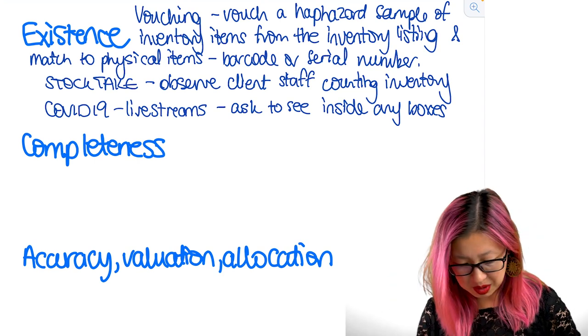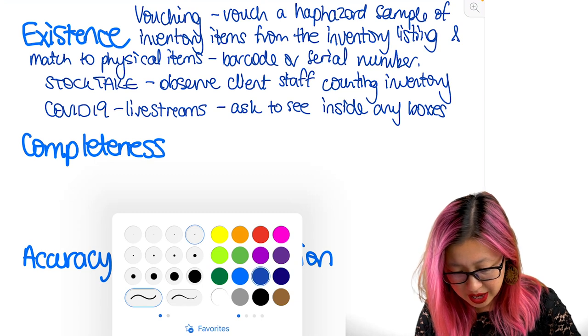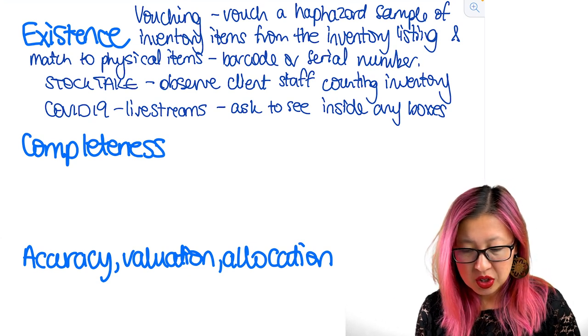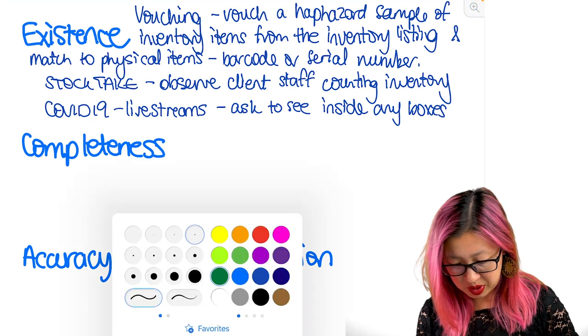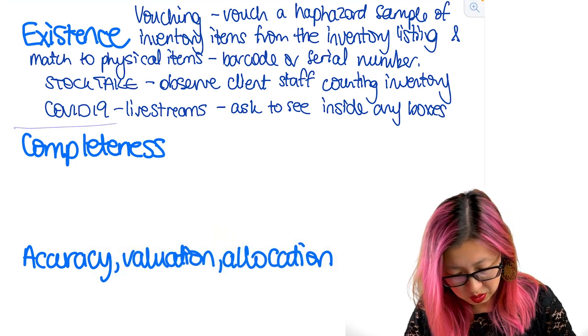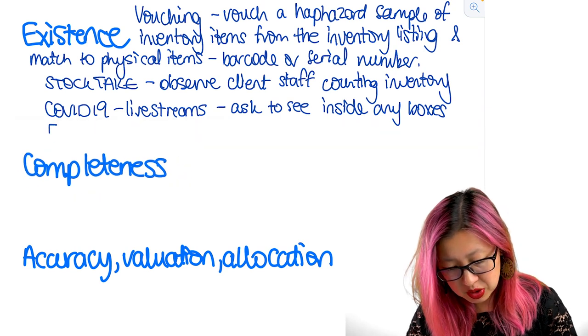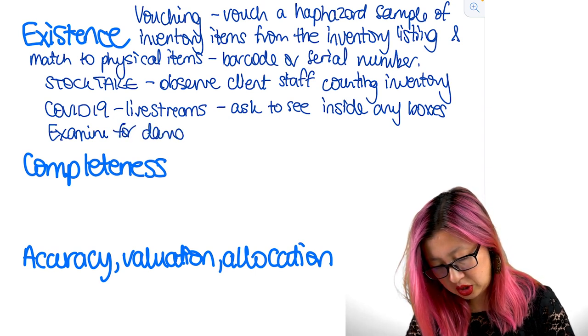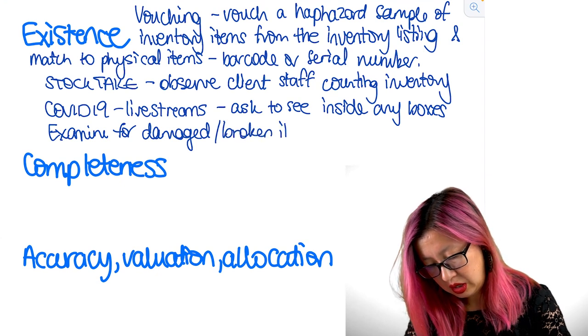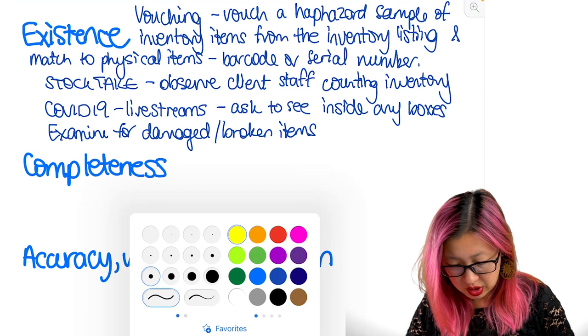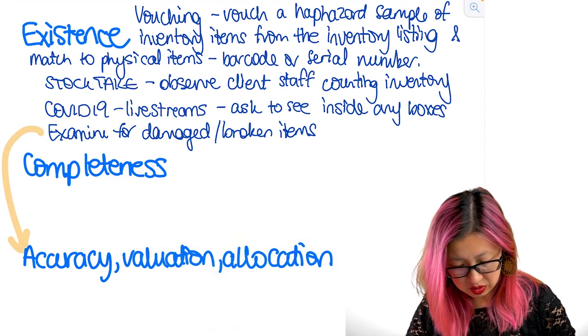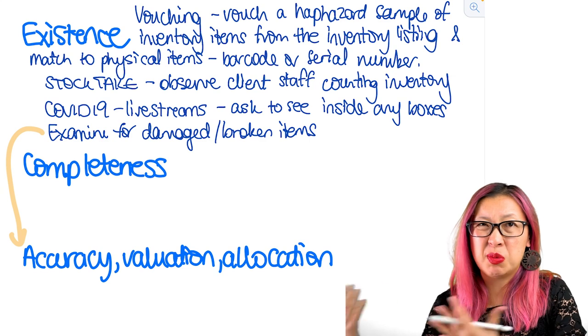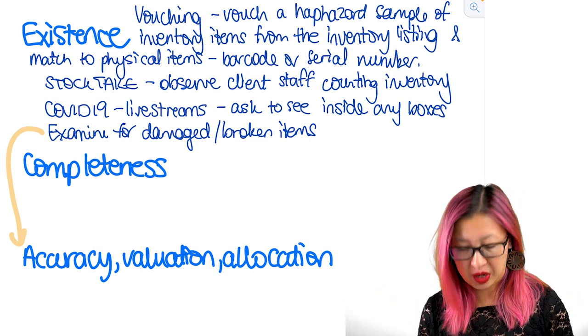So existence vouching: start from the record make sure that the physical item exists. Now the other side of that is completeness because remember existence is an overstatement thing. Companies are more likely to overstate their inventory. So the other thing that we need to look for when we're looking at existence is also we want to examine for any damaged or broken items and that'll link through a little bit later on to our accuracy and valuation. Because broken items will later on help us, oh look this needs to be written off this is overvalued. So existence and that valuation tend to go together.